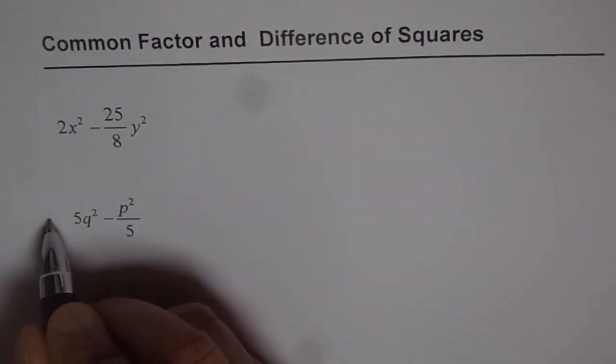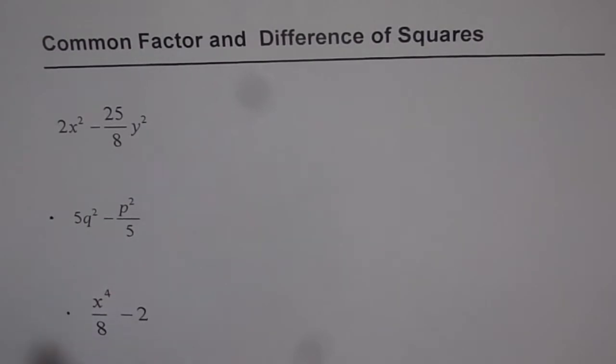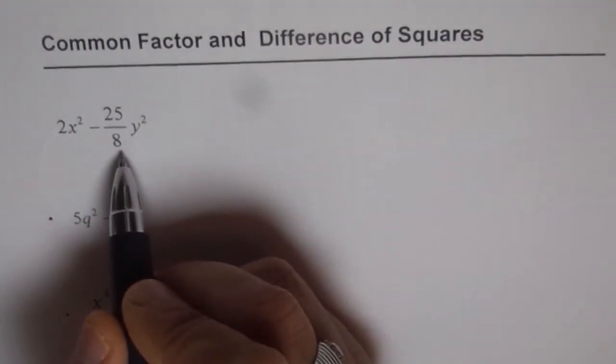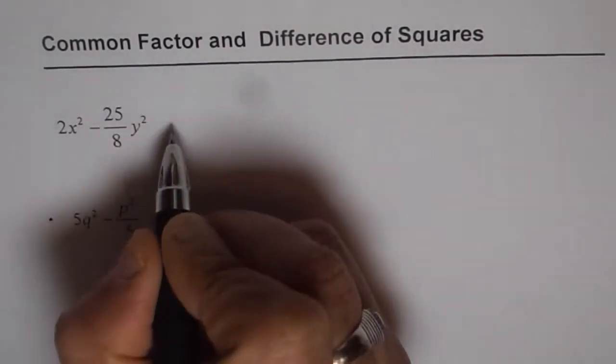So I'll do the first one and the other two are for you to practice. Now in the first one, x² and y² are squares. 25 is a square but 2 and 8 are not.